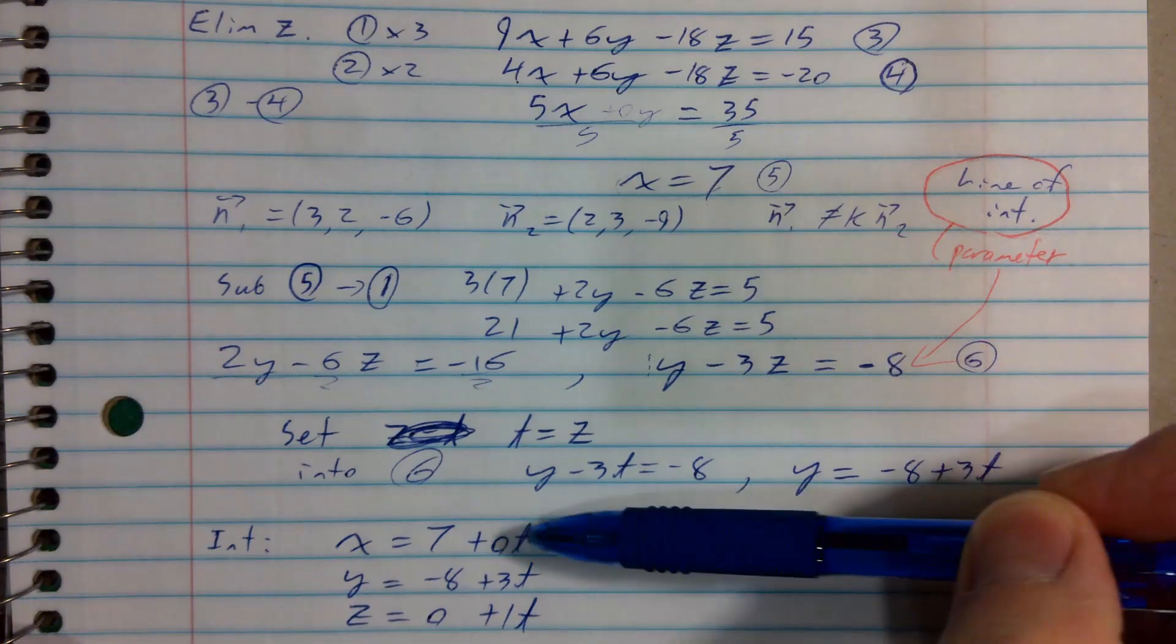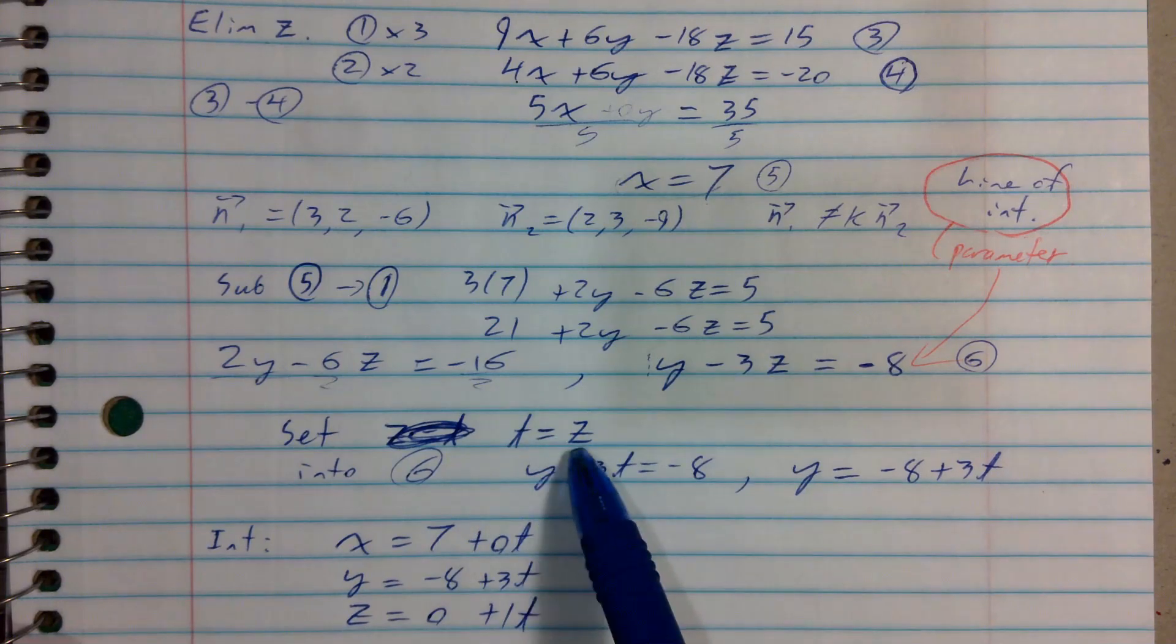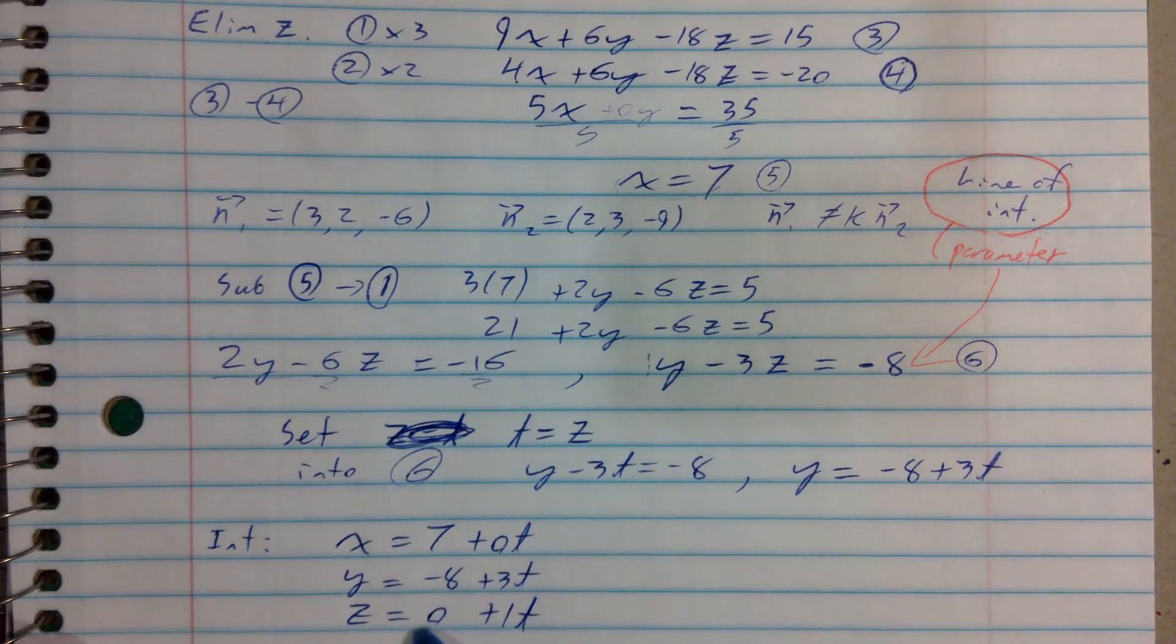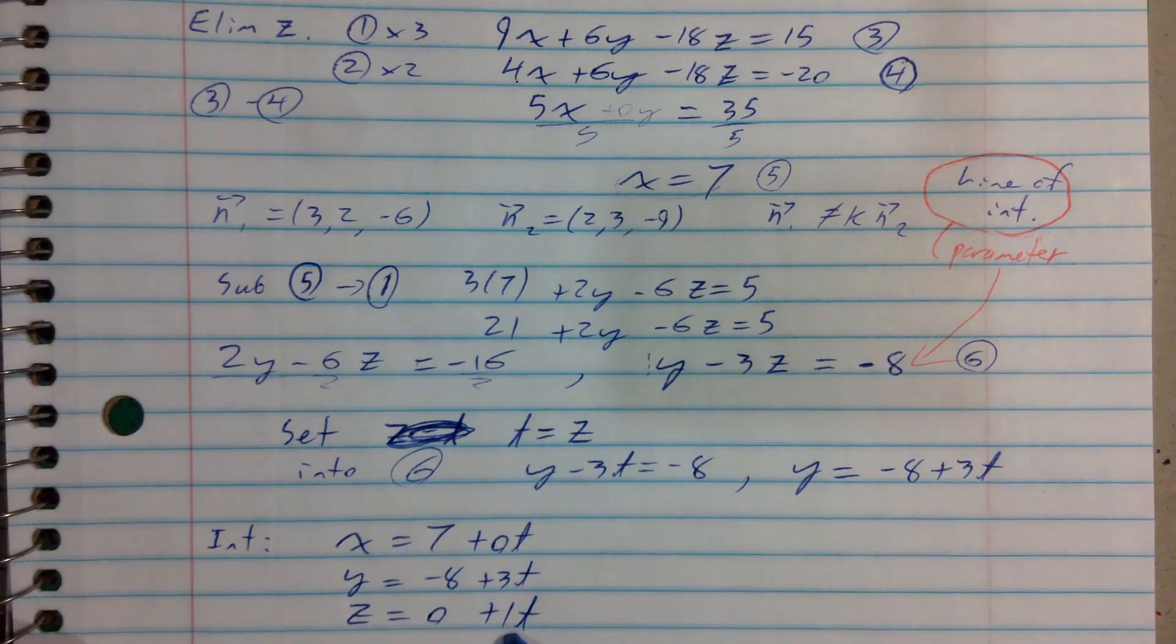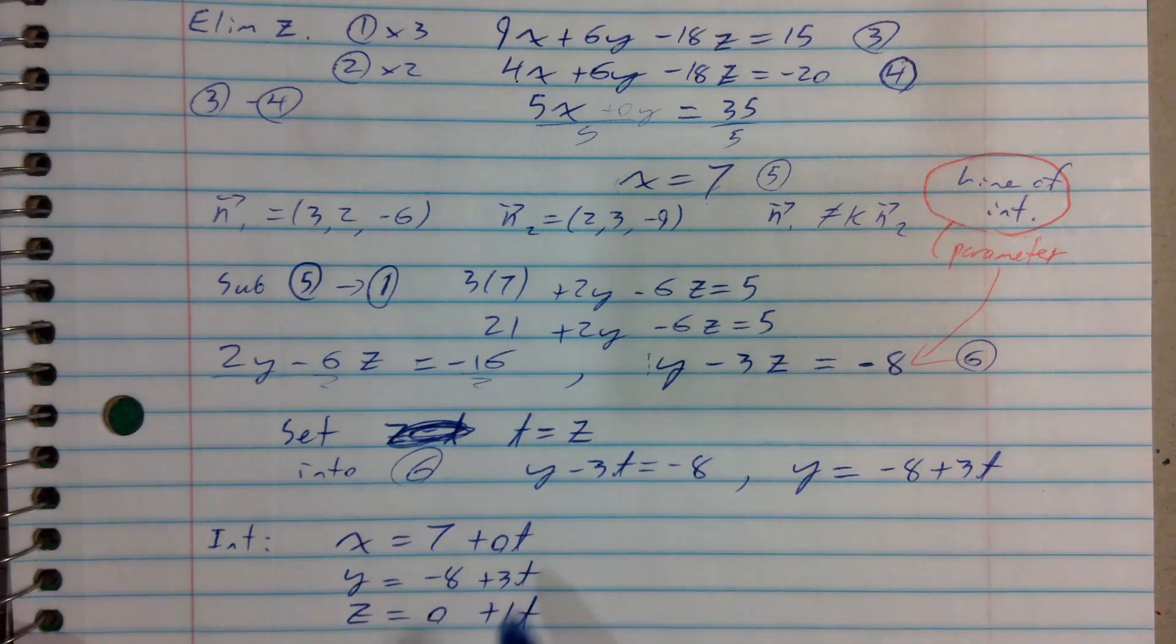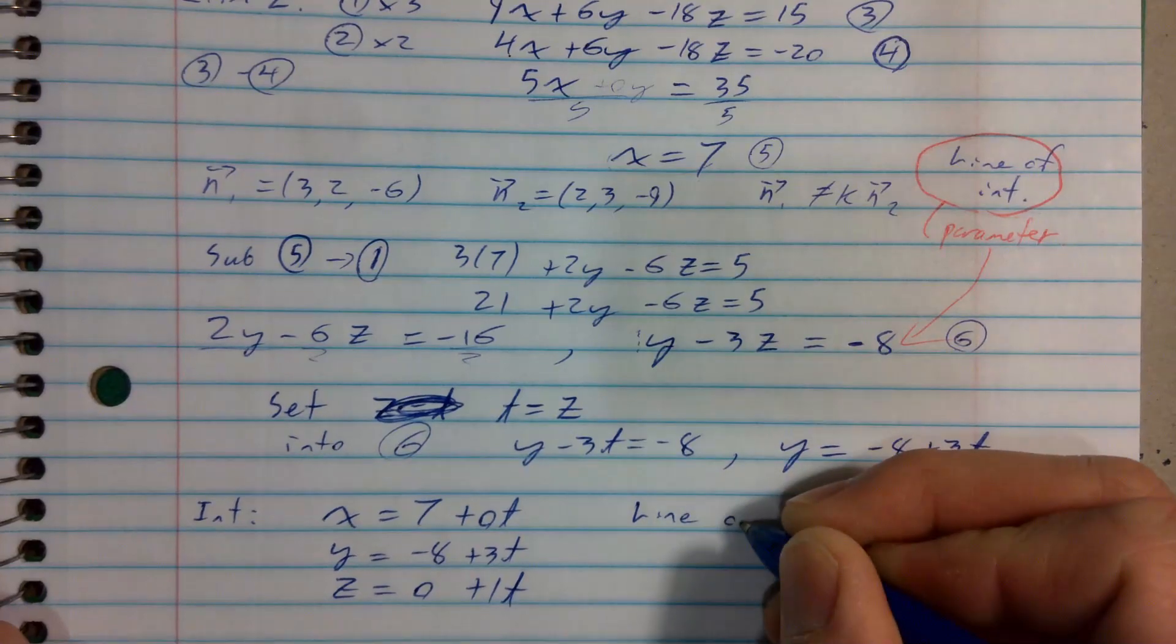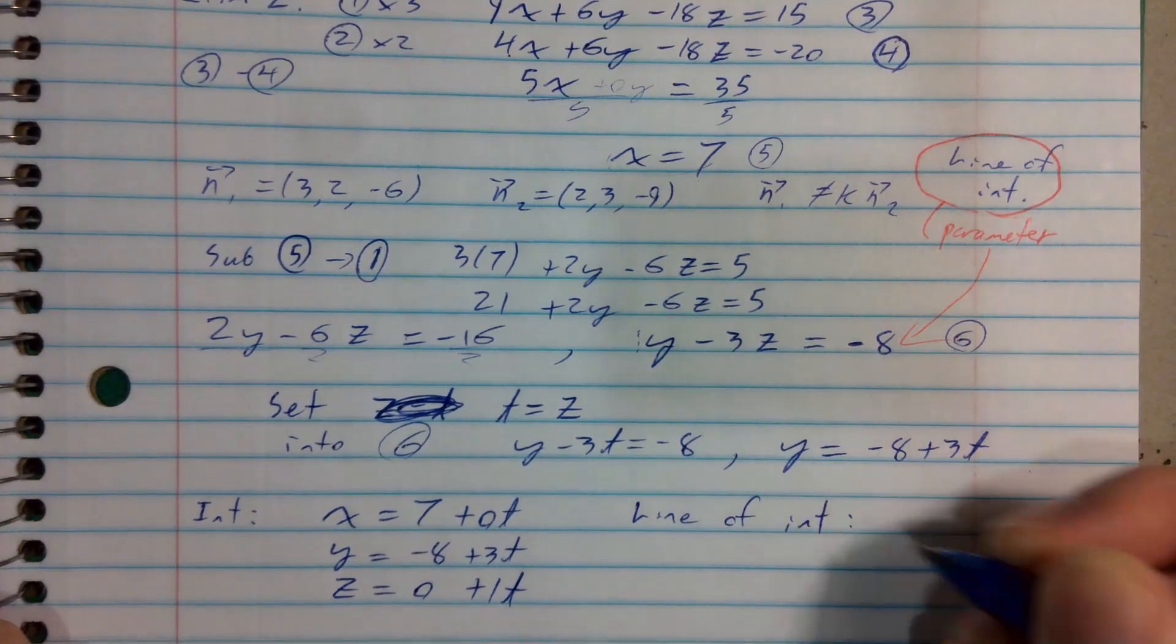So we discovered by manipulating the system that x is constant. x is always 7. And you'll see that in the direction vector here. We then said, what if we let z's parametric equation have a z coordinate, a z0 of 0, and a z component of its direction vector of 1, the consequence of that is discovering the parametric equation for y.